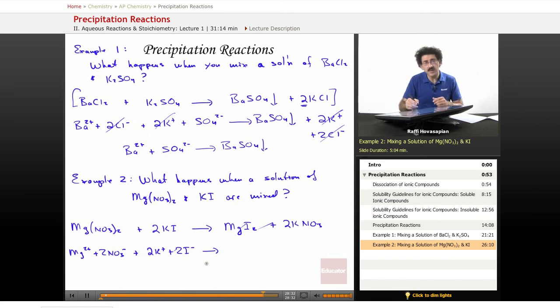Now let's look at magnesium iodide. It turns out magnesium iodide is also soluble. Therefore, you have Mg²⁺ plus 2I⁻, and potassium nitrate is definitely soluble. So 2K⁺ plus 2NO3⁻.